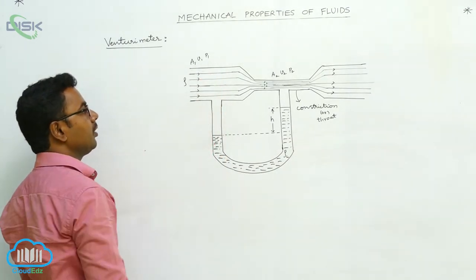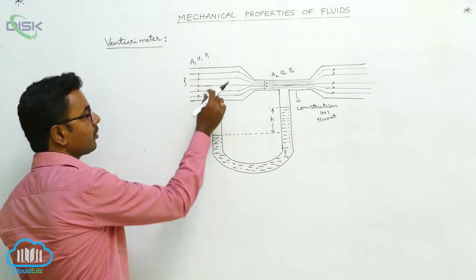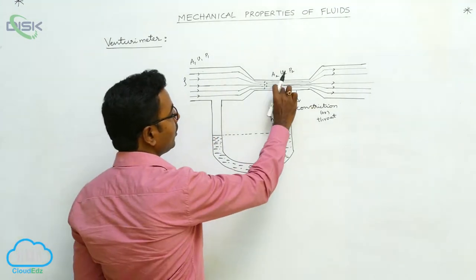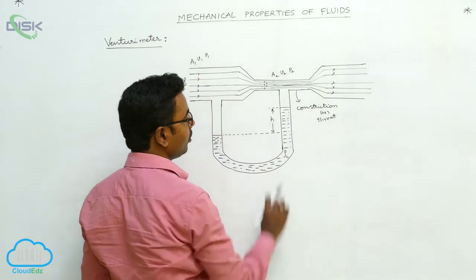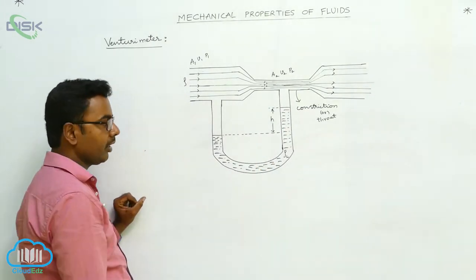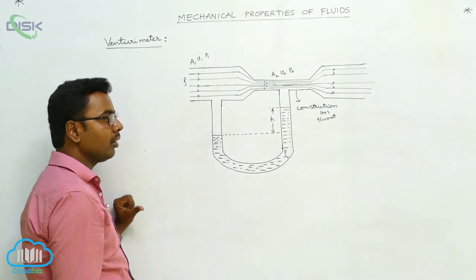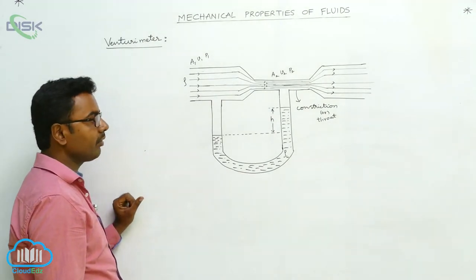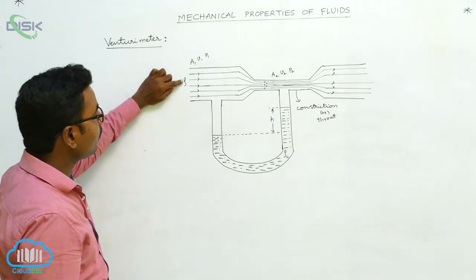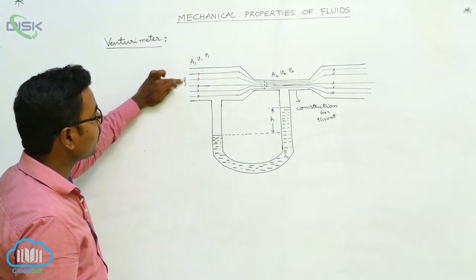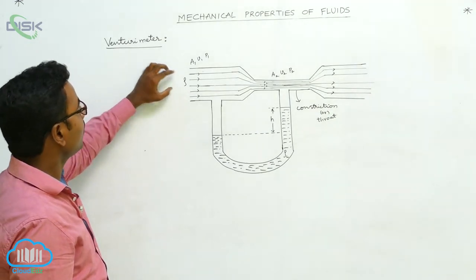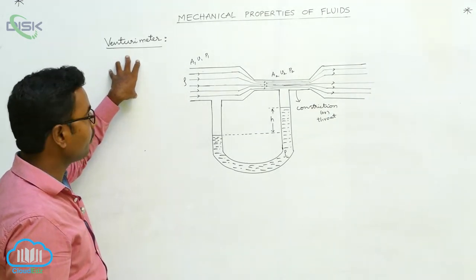The tube of larger area of cross section is connected to one limb of the manometer, and the throat or constriction is connected to the other limb of the manometer. The manometer is filled with a liquid of density rho-L, where rho-L is the density of the liquid in the manometer, and rho is the density of the fluid whose velocity we have to measure.